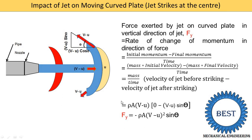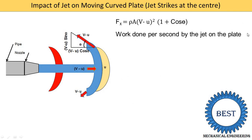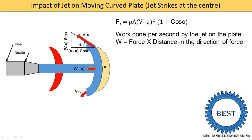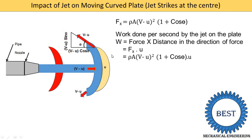Next we find the work done per second by the jet on the plate. The plate is moving in the x direction, so in the work done equation we take force Fx. Work done equals force in x direction times distance traveled by the plate. Since we don't know the distance, we use velocity — multiplying force by velocity gives power, so this is the rate of work done. Work done = Fx times u = rho·A·(v minus u)² · (1 + cos theta) · u.